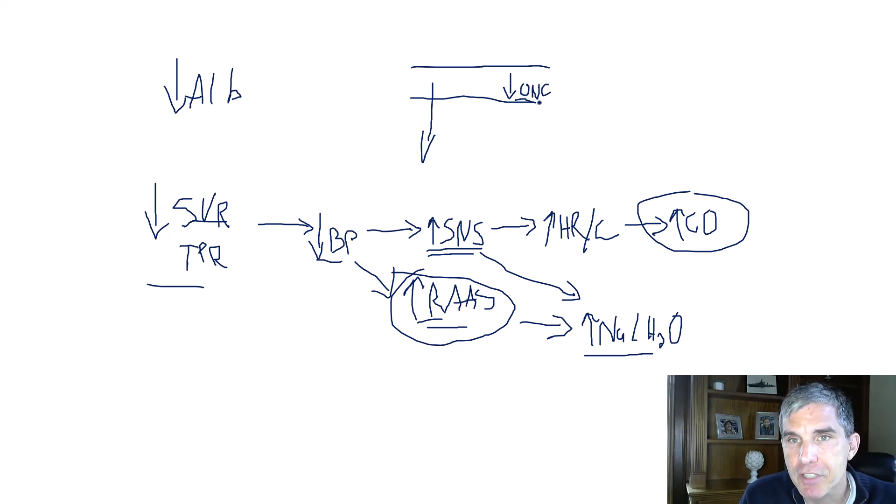When the oncotic pressure gets low in a capillary from low albumin, remember, albumin is the major determinant of oncotic pressure. And so when albumin is low, oncotic pressure gets low, and that drives fluid out in this direction.